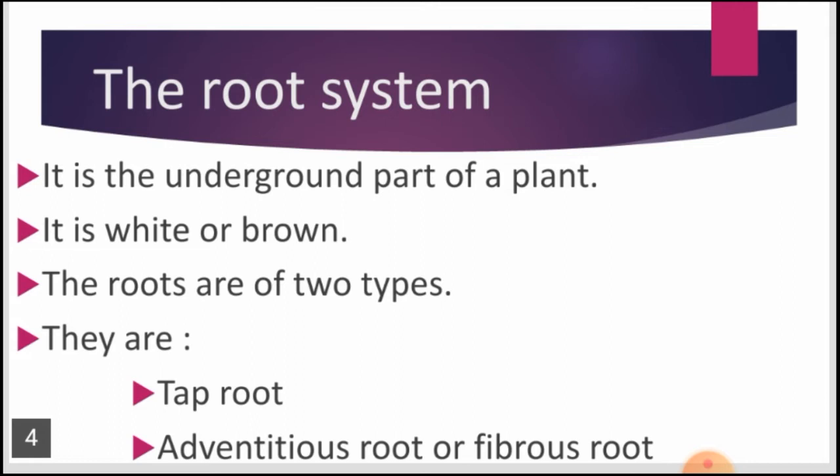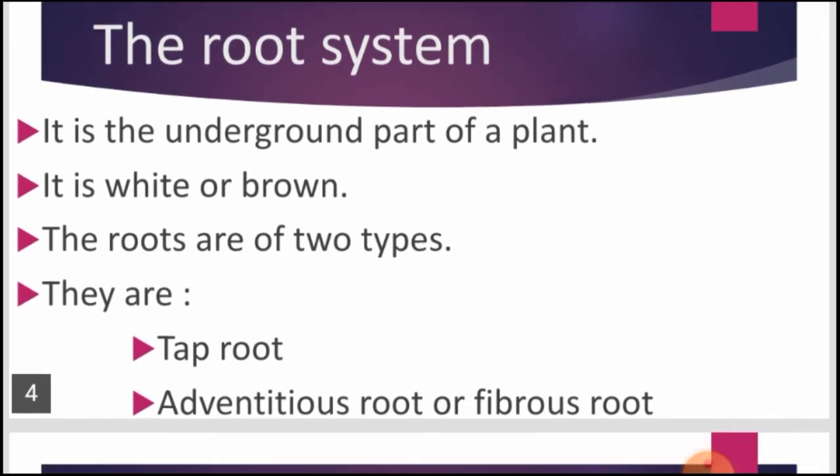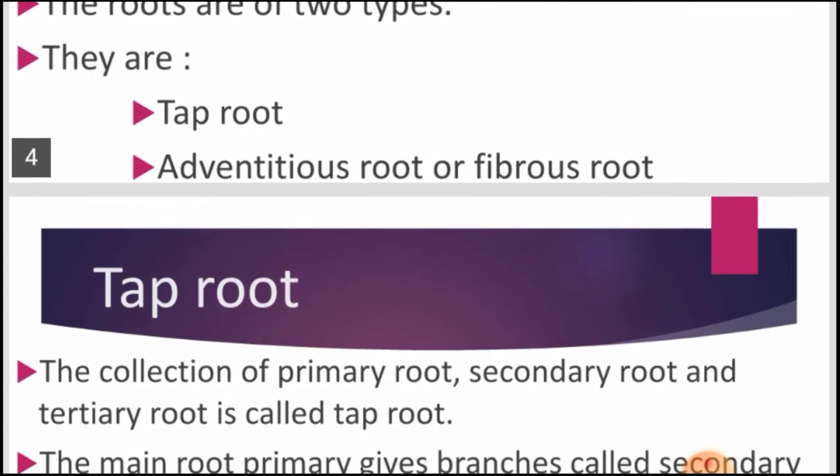Now let's discuss the root system. The root is the part of the plant body which grows under the soil. It is the non-green part of the plant — white or brown in color. The roots of some plants grow deep into the soil. Roots can be of two types: tap root and adventitious or fibrous root.